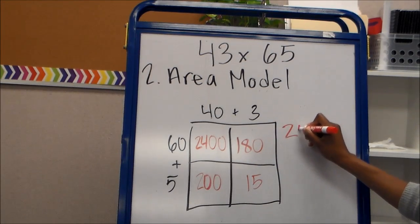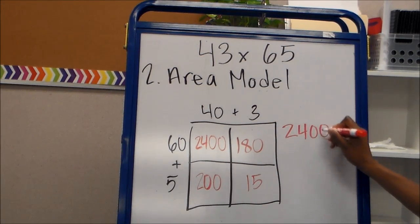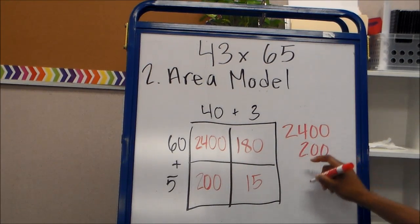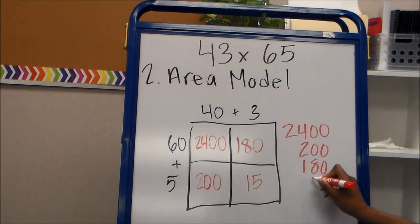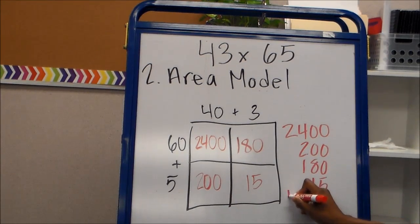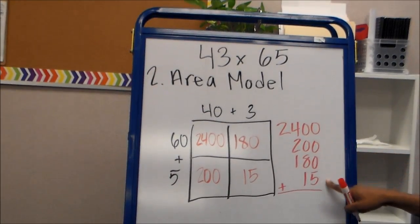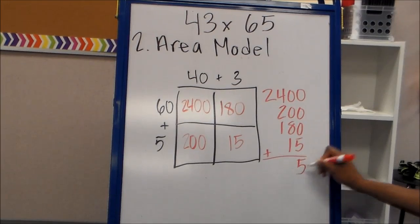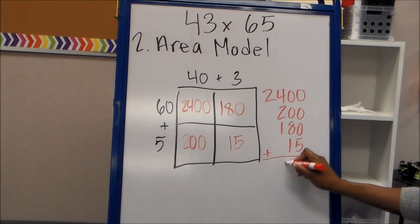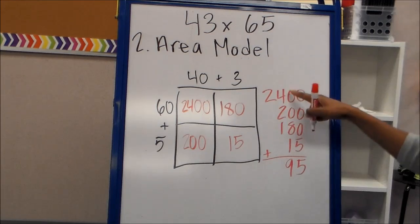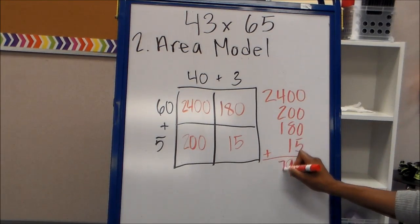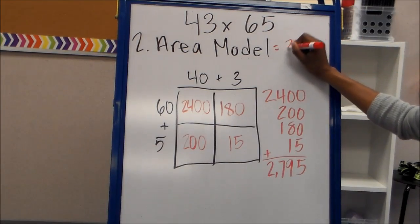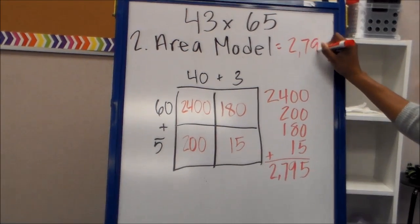When you're finished with that, you're going to add up all these numbers. So on this side we're going to have 2400 plus 200 plus 180 plus 15. And just like regular addition, you start from the ones place and you have 5 right here. And then the tens place gives you 9. The hundreds place, 4 plus 2 is 6, plus 1 is 7. And then the thousands place you have 2. And the answer is 2,795.